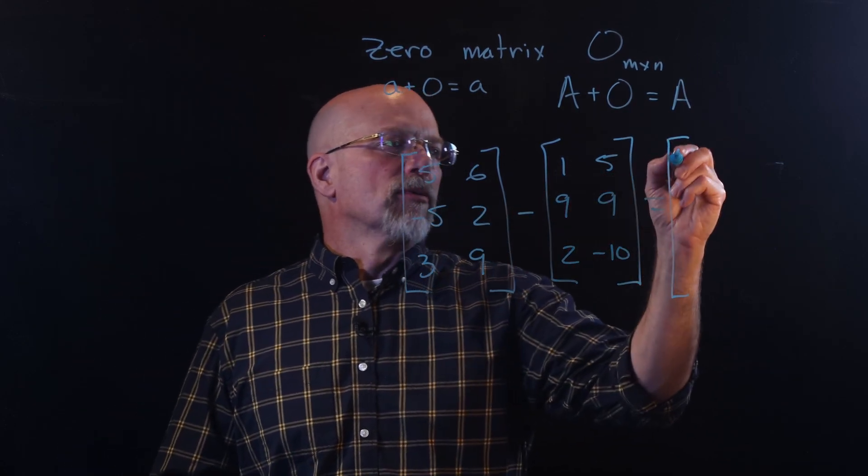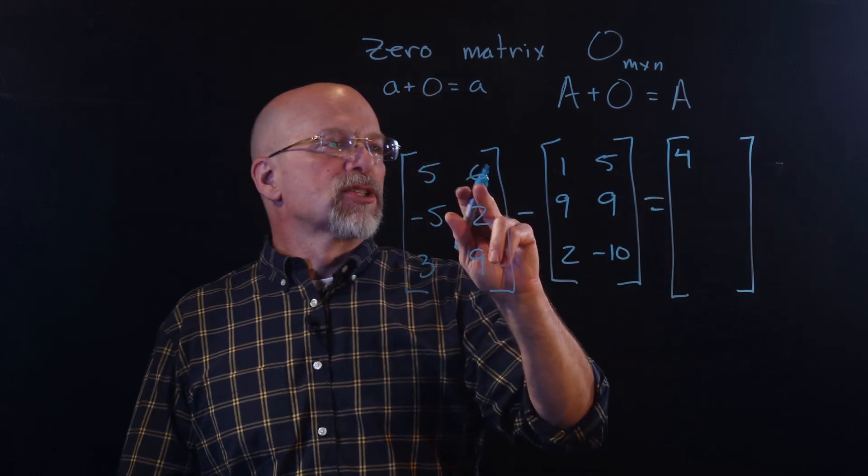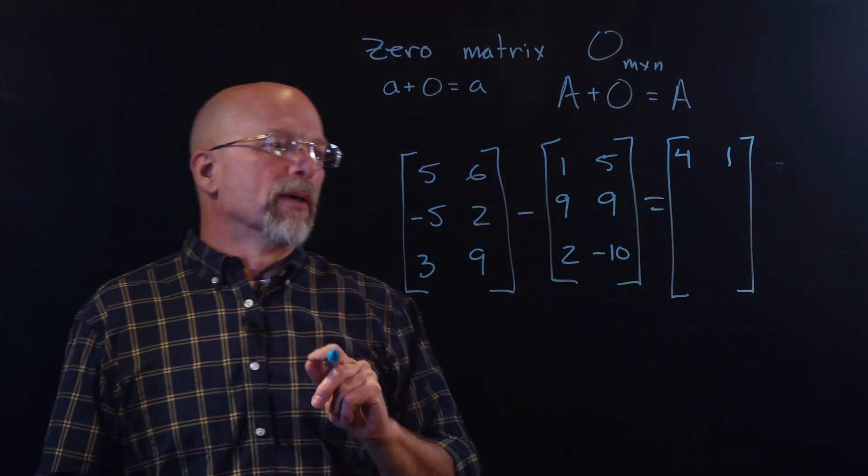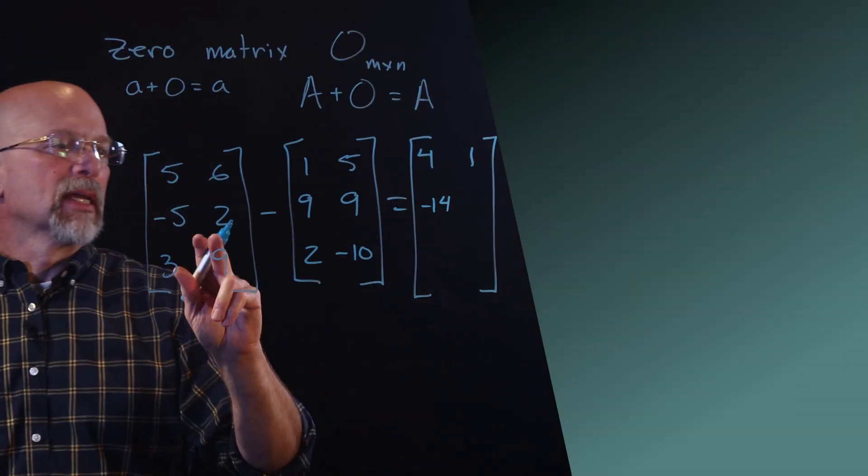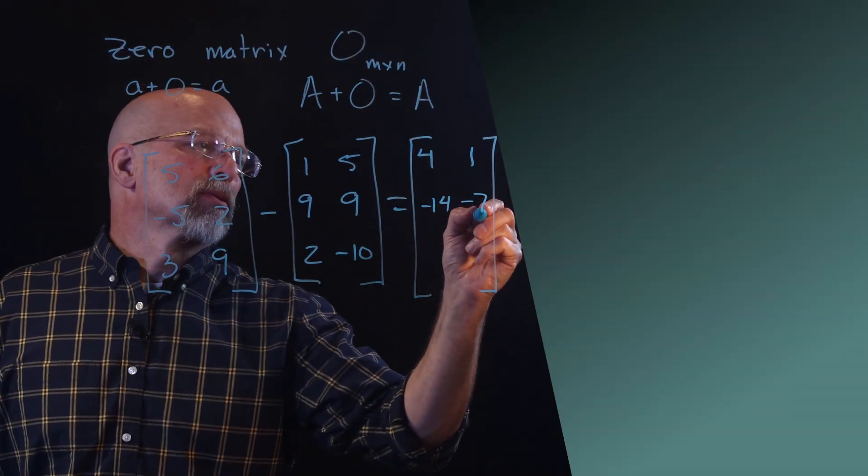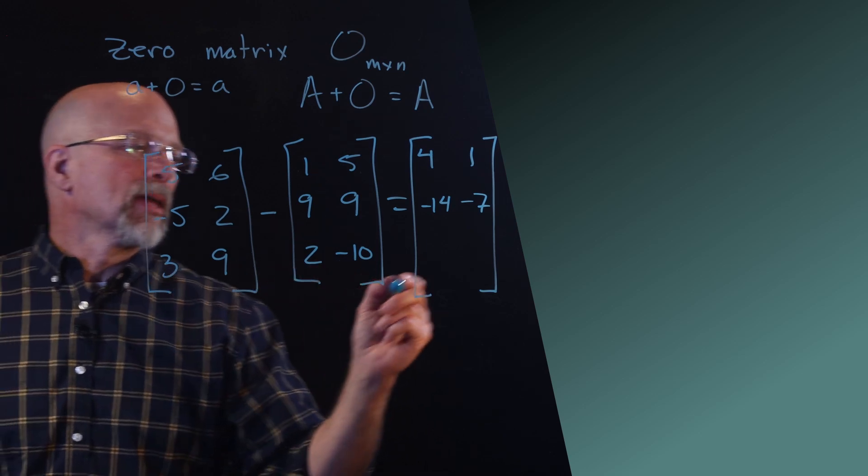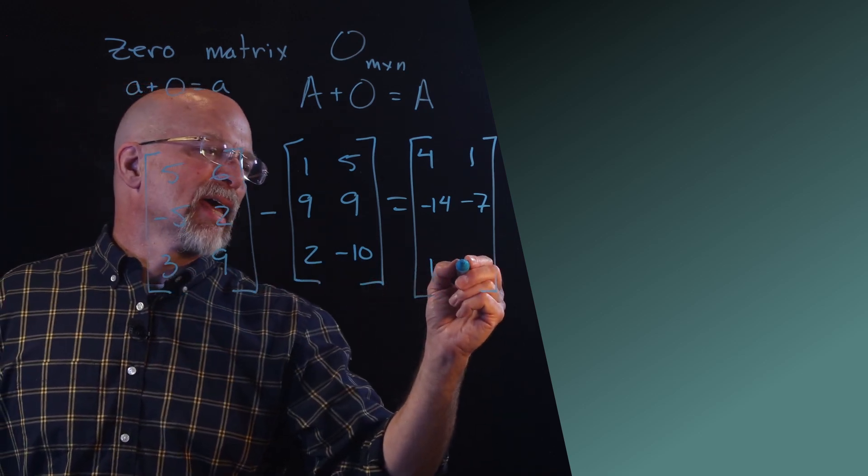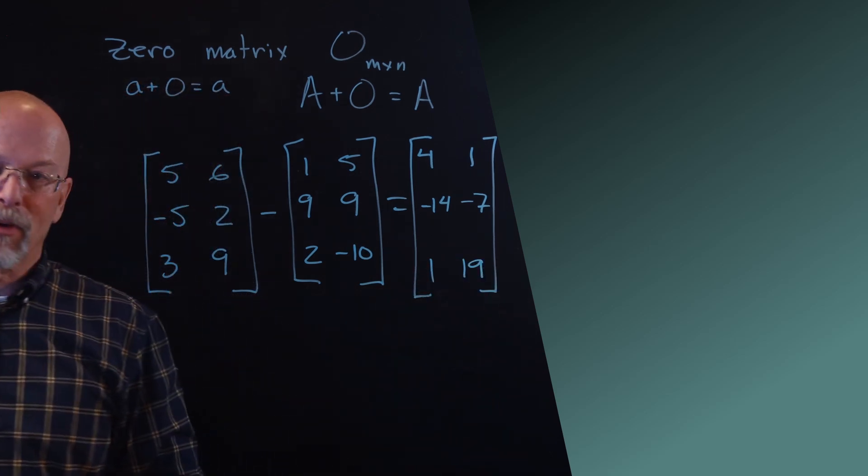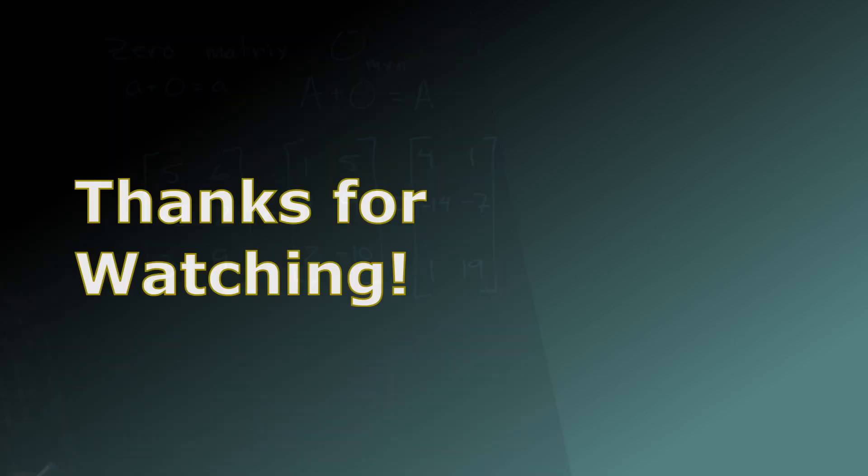And so what we've got is 5 minus 1, that's going to be 4, 6 minus 5, that's 1, minus 5 minus 9, that's minus 14, 2 minus 9, that's minus 7, 3 minus 2, that's 1, 9 minus a negative 10 is 19. There you go.